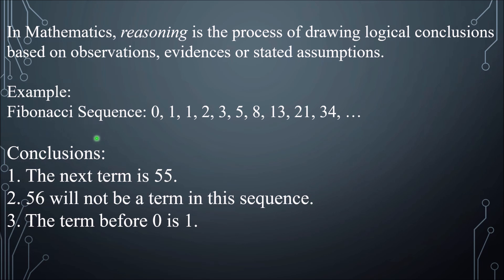In this example, we have the Fibonacci sequence. Let's observe the Fibonacci sequence and look at some patterns. As we can see, the next term is taken from the sum of the two preceding terms. For example, 2 is taken from 1 plus 1, 3 is taken from 1 plus 2, and so on. That's one observation.